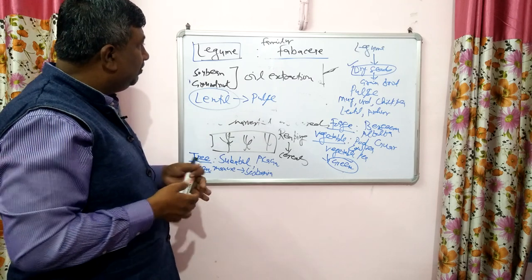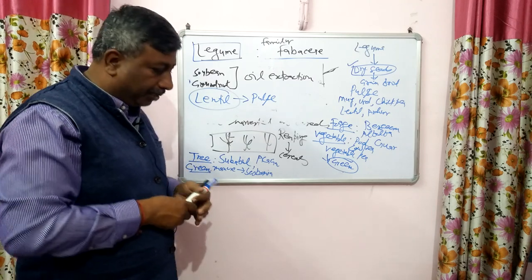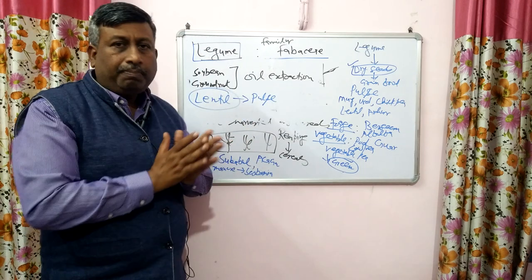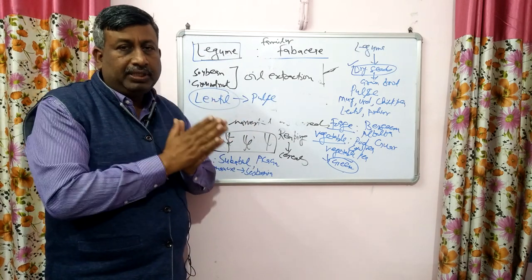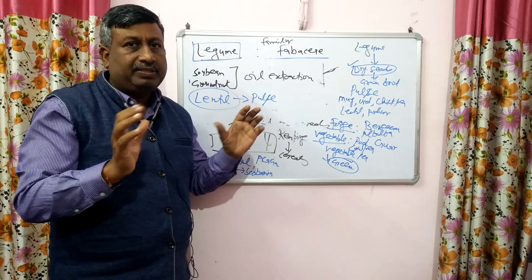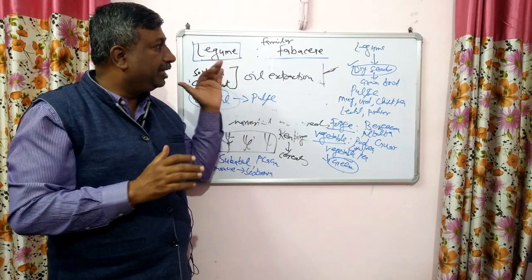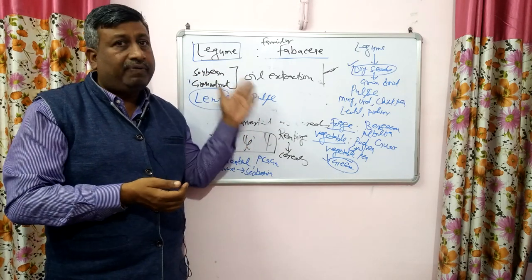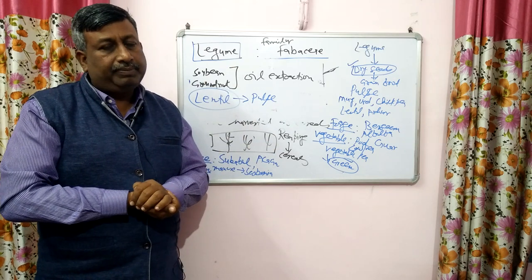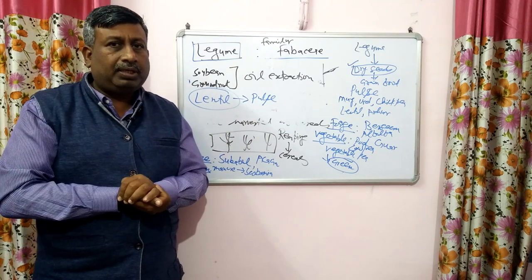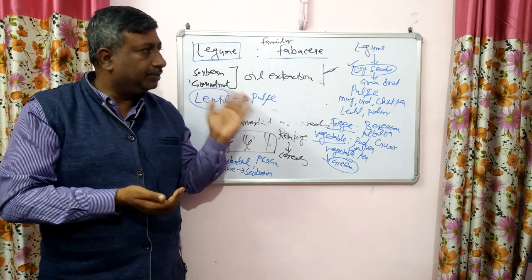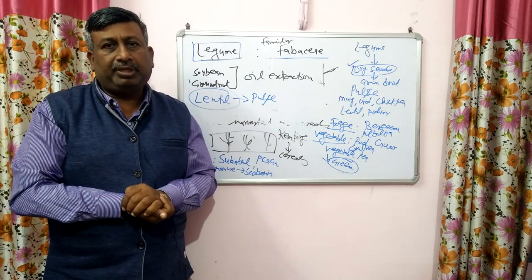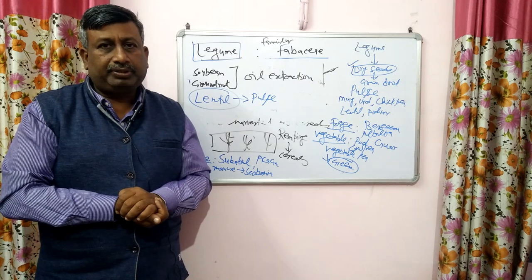So this was about cereal crops, millets, and pseudo cereals — the differences among these three — and the difference between legume and pulse crops, and the different types of legume crops. I hope this was helpful. If you liked this lecture, please like it, and if you haven't subscribed to the channel, please subscribe. Thank you very much.